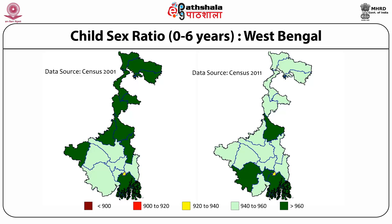Now we are looking at eastern India, the state of West Bengal. We are using different cut-offs in different regions because the declines started at different times — in Punjab and Haryana we saw declines in the 80s and 90s, while in Bengal we are seeing declines more recently. The 2001 map looks mostly dark green, except for Calcutta which is yellow and remains yellow in 2011. In upper Bengal, the Darjeeling area and adjacent areas are declining.